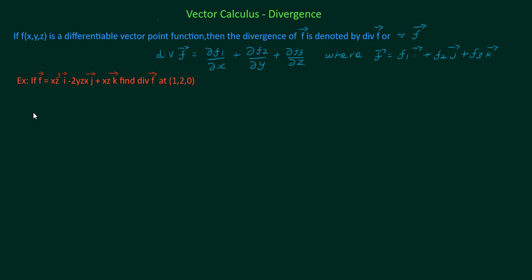If f is a differentiable vector, then the divergence of vector is denoted by div f vector or del dot f vector. Div f vector is ∂f1/∂x + ∂f2/∂y + ∂f3/∂z, where f1, f2, f3 are coefficients of i, j, k vector respectively.